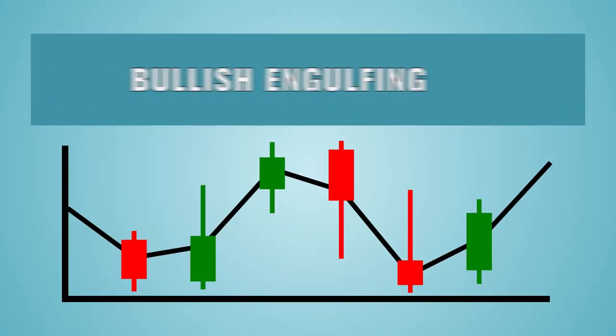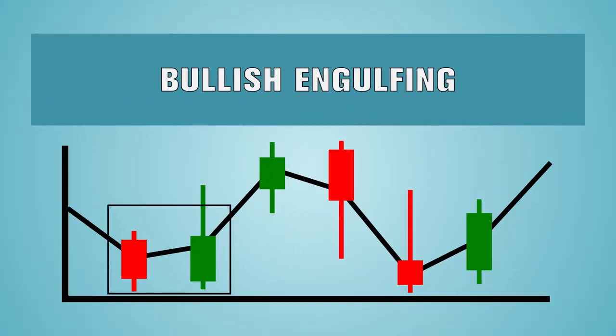A bullish engulfing is a red candle followed by a bigger green one, whose body fully engulfs the preceding red candle. The larger the proportion of the engulfing candle, the stronger the indication is to buy.